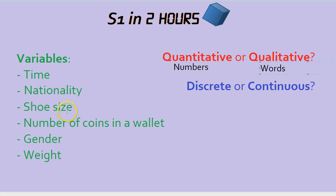Let's check out these ones on the left and say which one they are. Time. For time, you need numbers, so it would be quantitative.